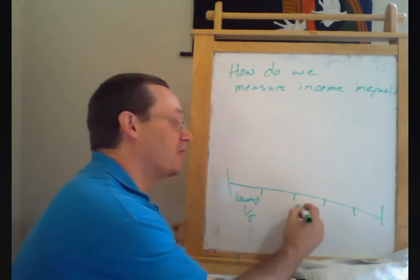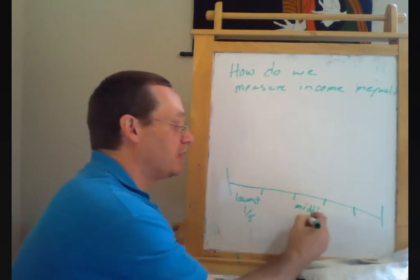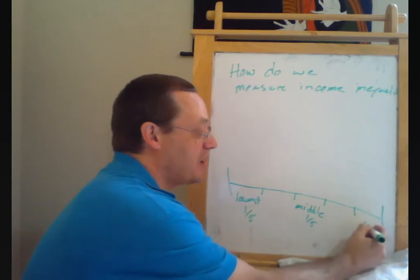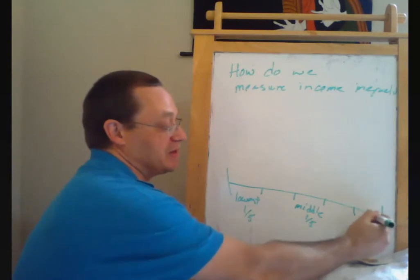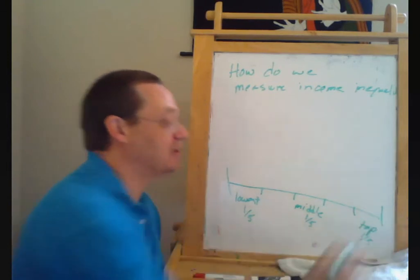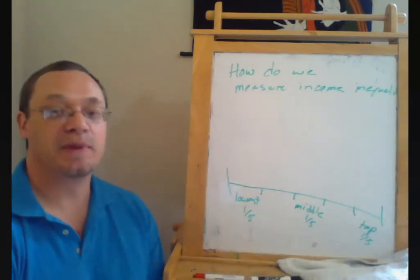The second lowest one-fifth, the middle one-fifth, the second highest one-fifth, and the top one-fifth. And then sometimes we split this up into the top five percent, which would be the top one-twentieth, or the top one percent, and so on.